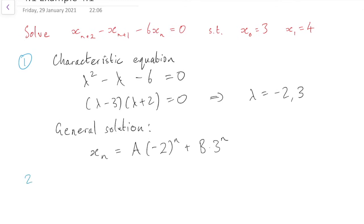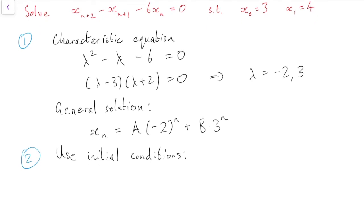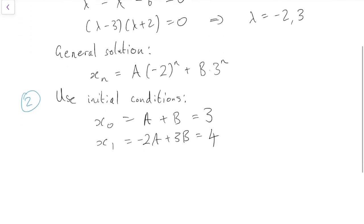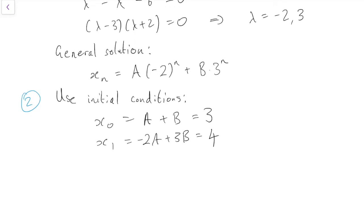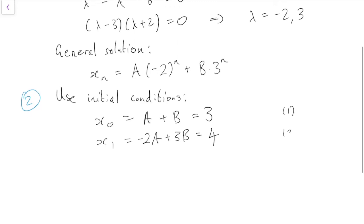Okay, now part two is to use the initial conditions to find the values of A and B. So the condition x_0 equals 3 gives us A plus B equals 3. And x_1 equals 4 gives us -2A plus 3B equals 4. So now we have two simultaneous equations, which we have to solve in whatever manner you prefer to solve simultaneous equations in.